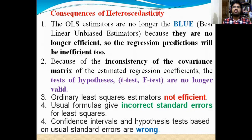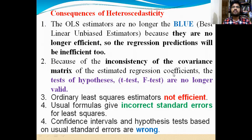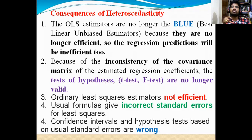The second consequence is: because of inconsistency of the covariance matrix — that is, inconsistency of the covariance of the estimated regression coefficients. When you are estimating the model, before estimating, we need to check whether the particular model has been suffering from multicollinearity or not — how we can check from the correlation matrix or covariance matrix. You need to take care of the inconsistency of the covariance matrix of the estimated regression coefficients, that is beta 1, beta 2, beta 3 — those are called regression coefficients. We need to look at whether there is any relationship among them or not.